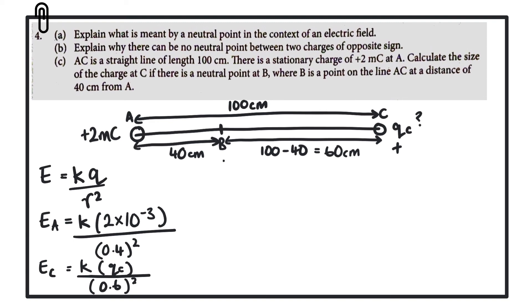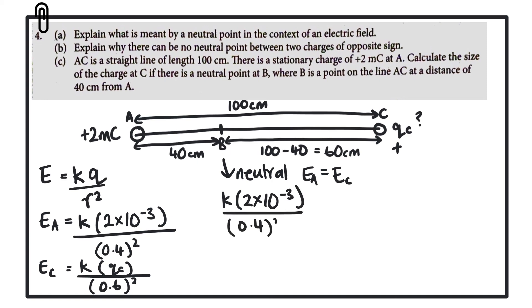Because B is a neutral point, the two electric field strengths are equal, so we set the expressions equal: k × (2 × 10⁻³) / (0.4²) = k × Q_C / (0.6²). The constant k appears on both sides and cancels out. It is good practice to work in metres, though since we're equating both sides it wouldn't strictly change the result.